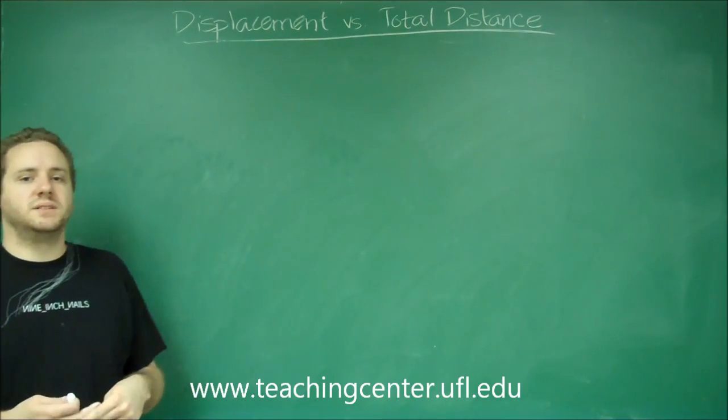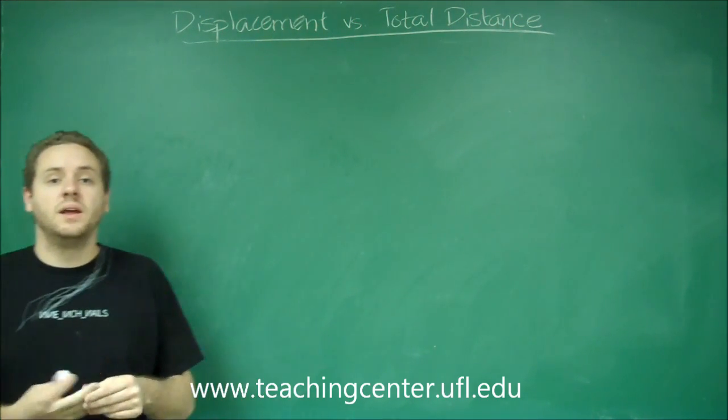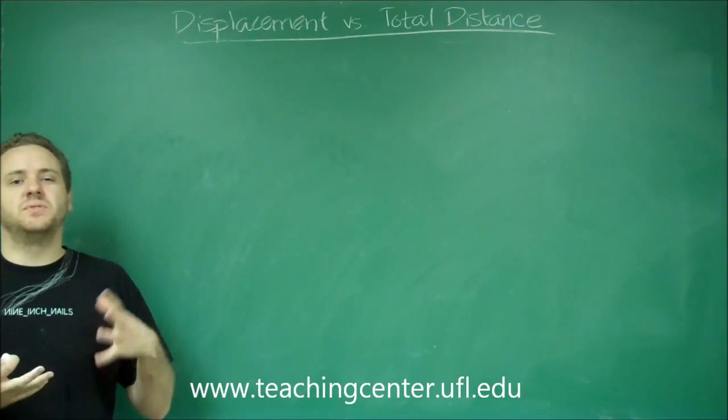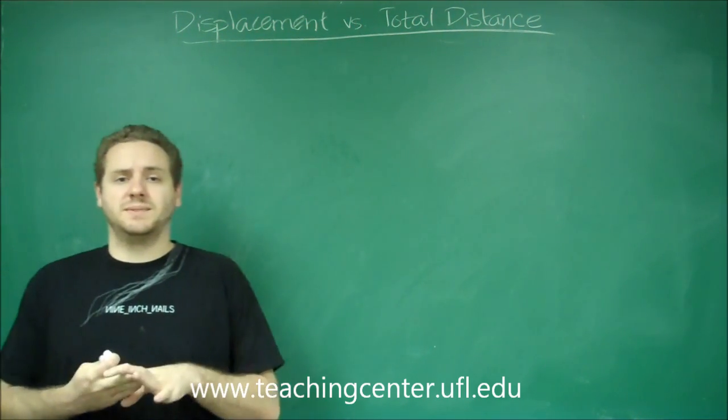Displacement and total distance are two different ways of measuring how far something has traveled in a problem that usually relates to distance, velocity, and acceleration. So first let's talk about displacement, that's the simplest one.